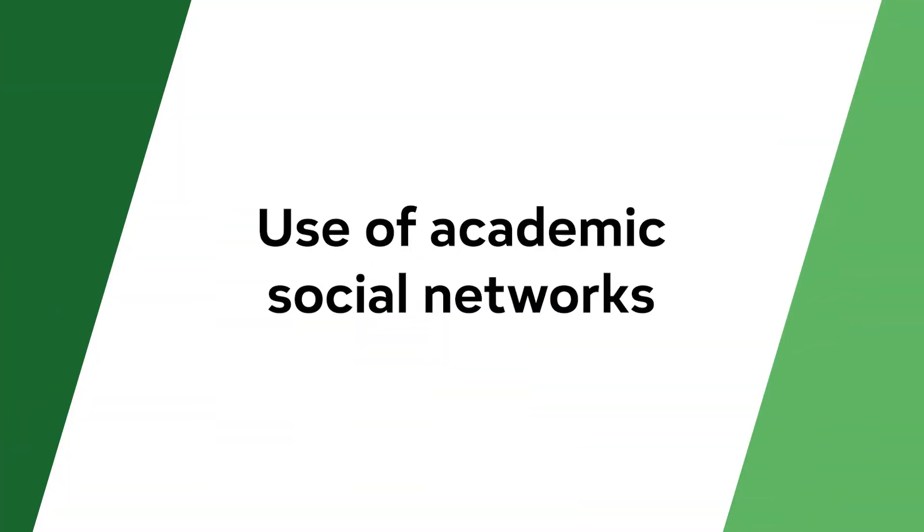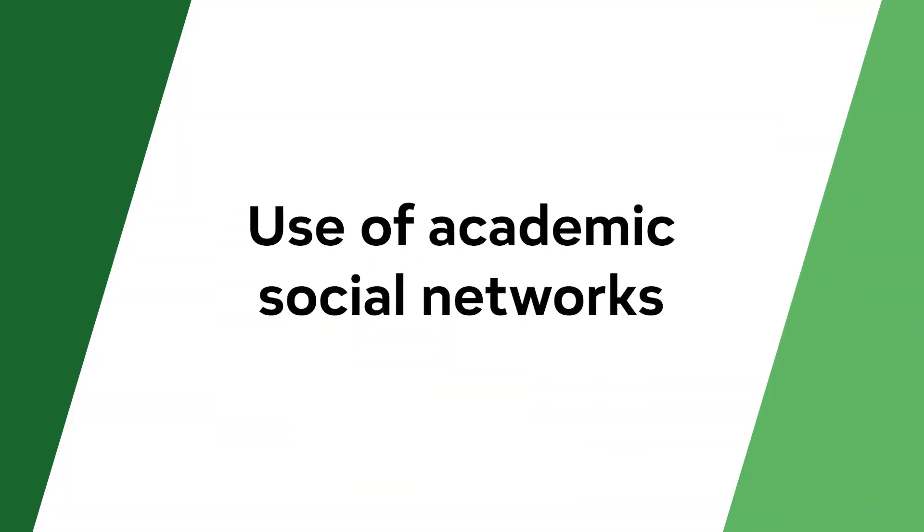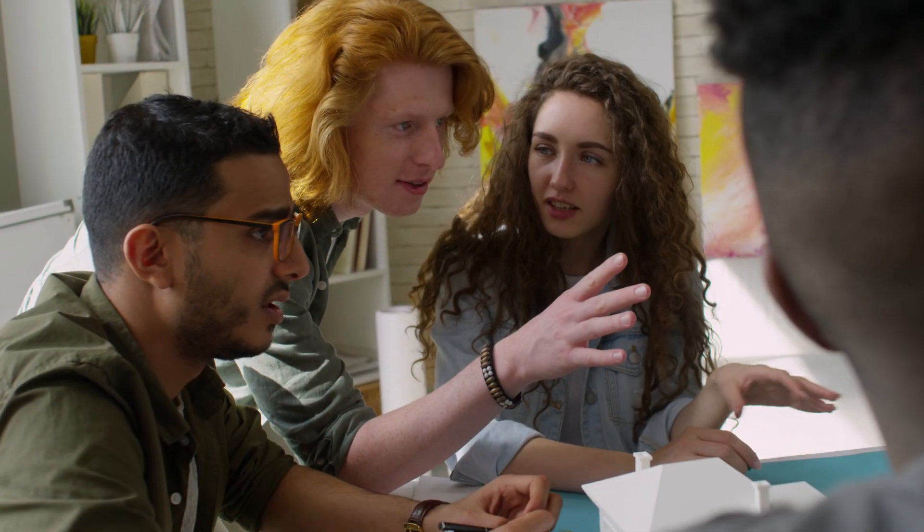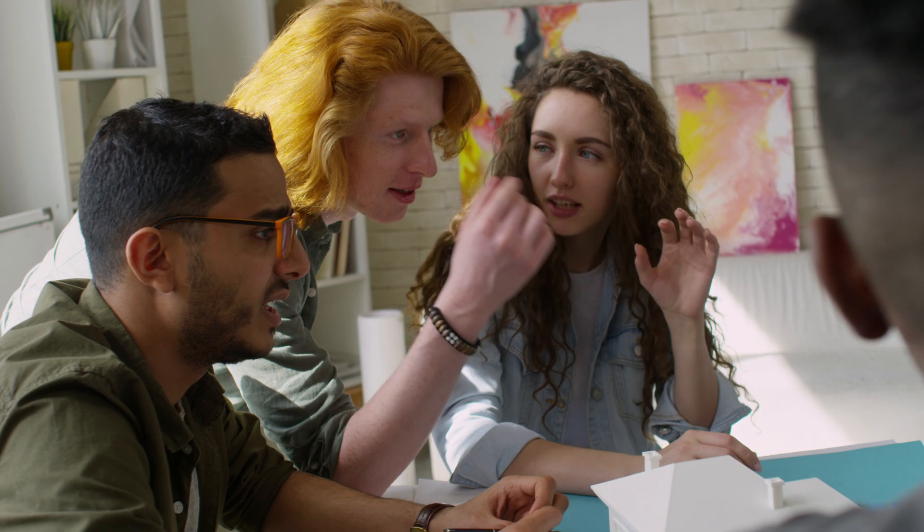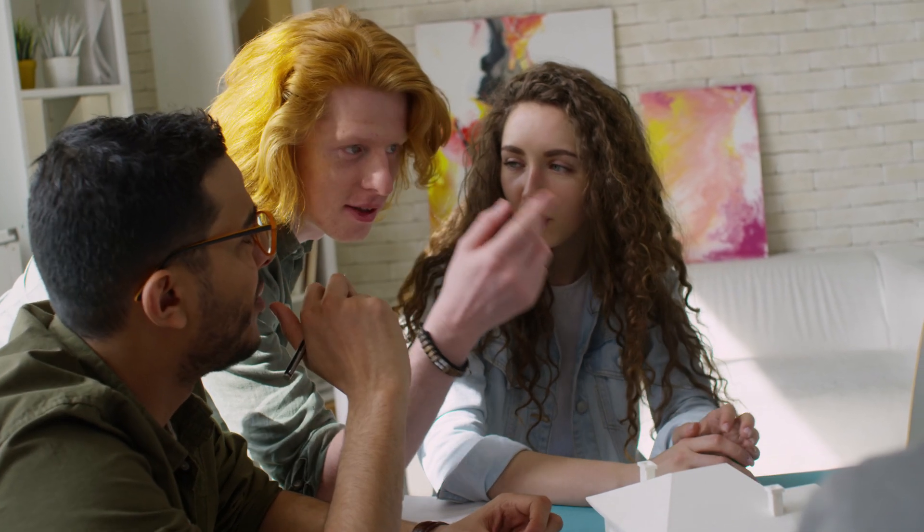Tip number four: Use academic social networks. Platforms like ResearchGate, Academia.edu, and Mendeley are designed for researchers to share their work and connect with other scientists. Upload your articles or preprints to those platforms to make them accessible to a larger audience. This will boost visibility and increase the chances of citations.